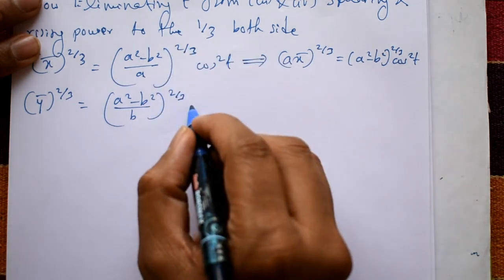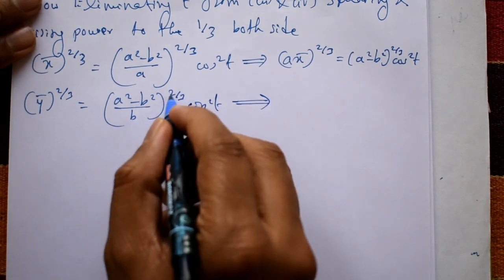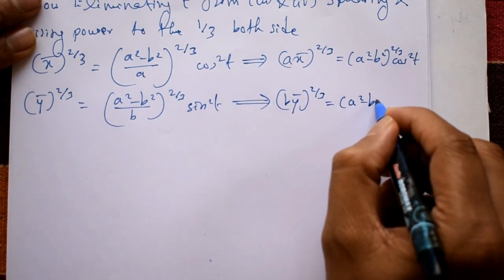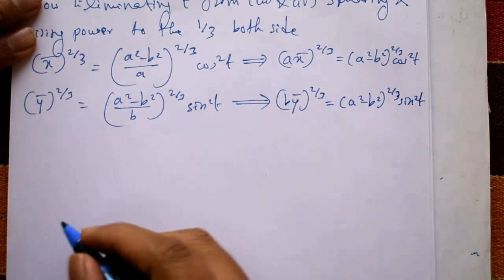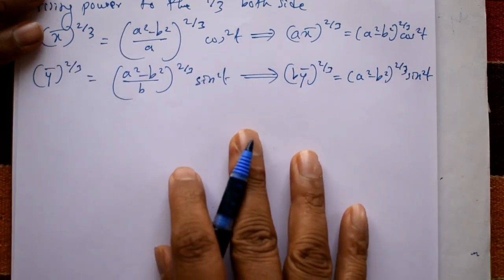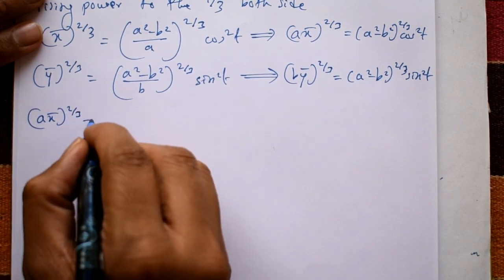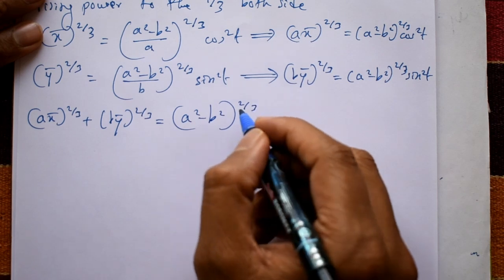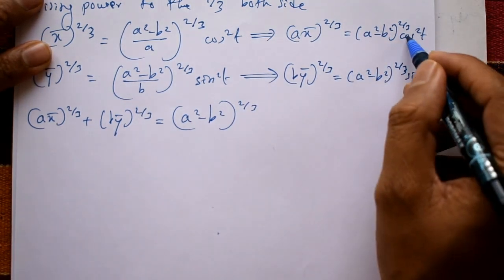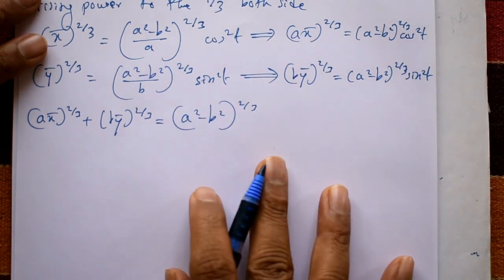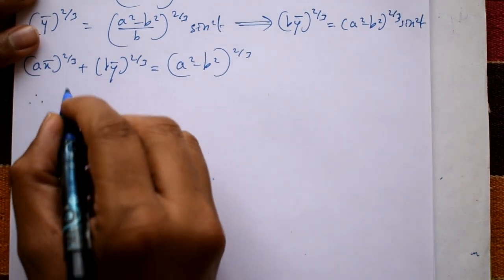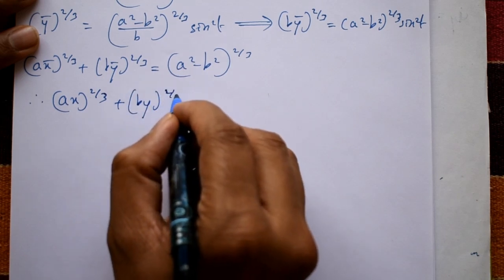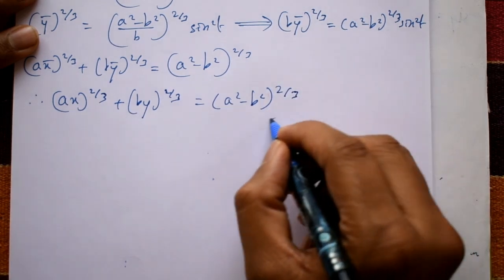Adding these two equations: (a·x̄)^(2/3) plus (b·ȳ)^(2/3) equals (a² minus b²)^(2/3) · (cos²(t) + sin²(t)). Since cos²(t) + sin²(t) = 1, the required solution is: (a·x̄)^(2/3) + (b·ȳ)^(2/3) = (a² minus b²)^(2/3). This is the evolute of the ellipse.